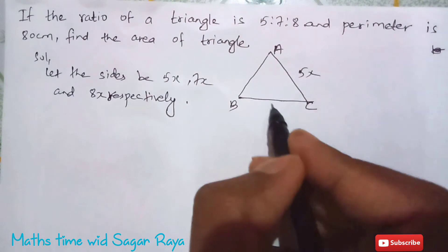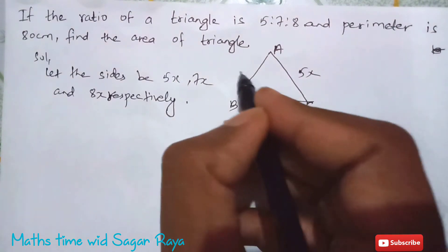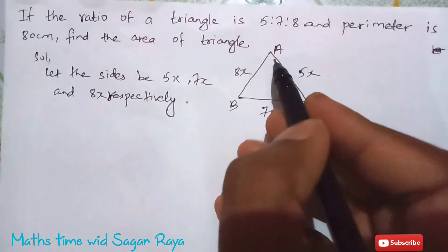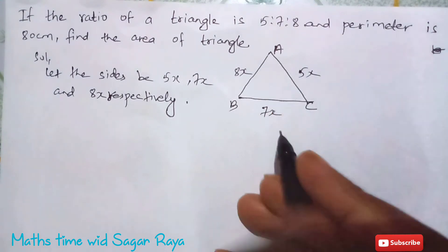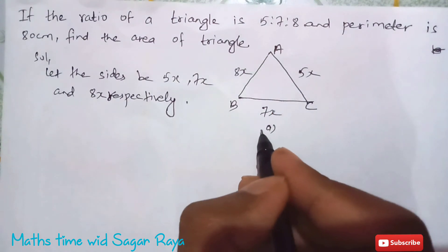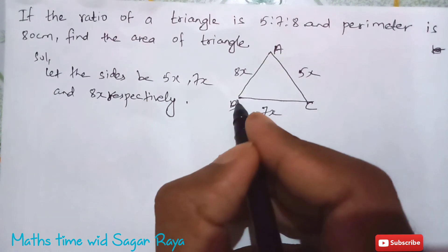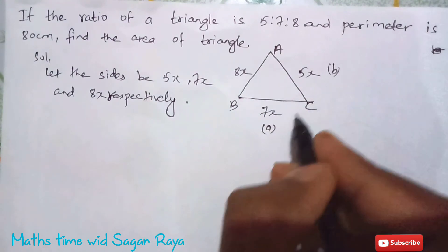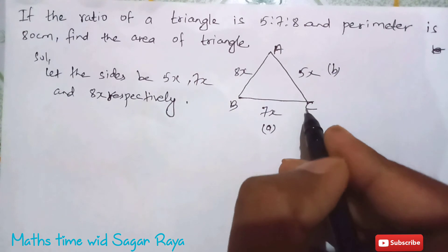Let it be 5x this one, 7x and this one 8x. Since this one is opposite to A, so I'm just supposing this as small a, opposite to B small b, and this opposite to capital C small c.